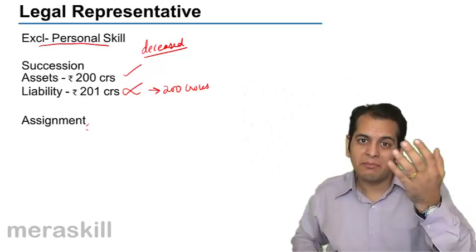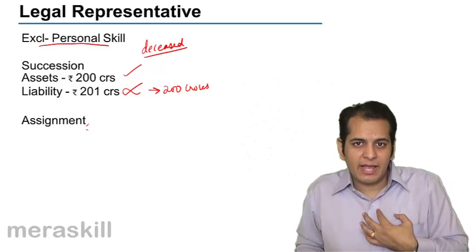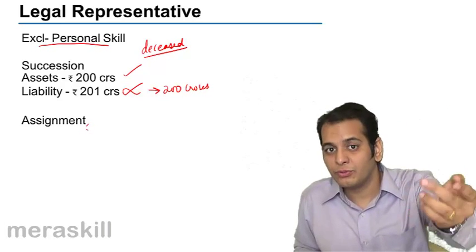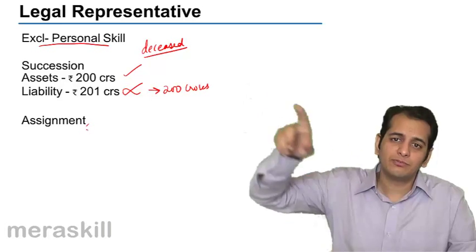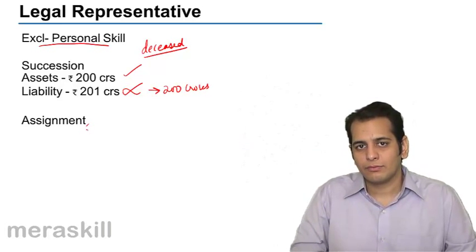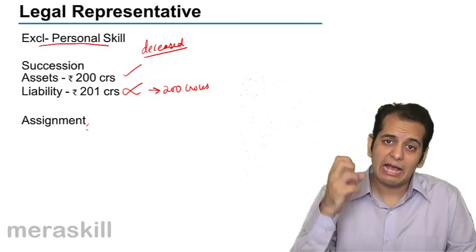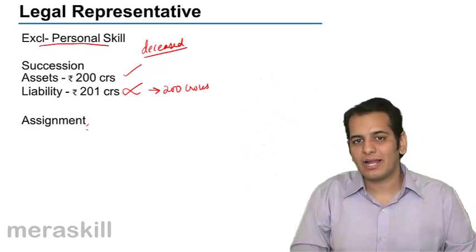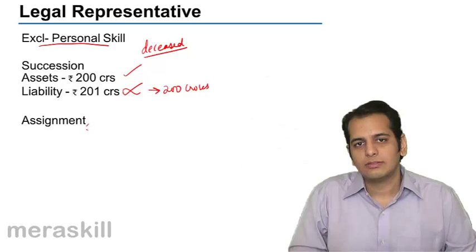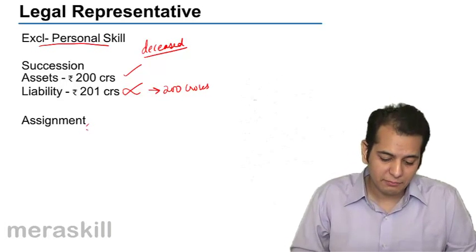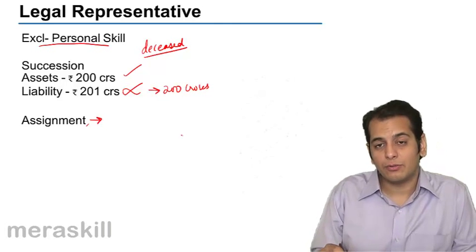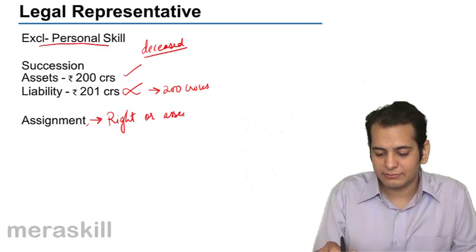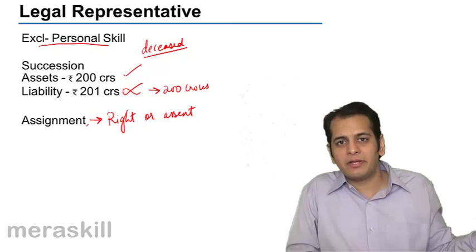Now I have transferred my right to you. The right which I had of receiving 10,000 from my party, now I have transferred it to you. And now you have the right to receive 10,000 rupees from that party. You will get 10,000 rupees. You have that right because I have transferred that right. And this transfer of right is called as assignment. But please remember, assignment can only be done of a right or an asset. There can be no assignment of a liability.